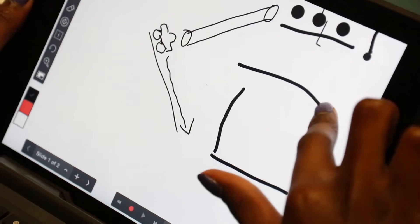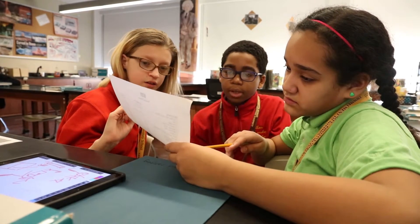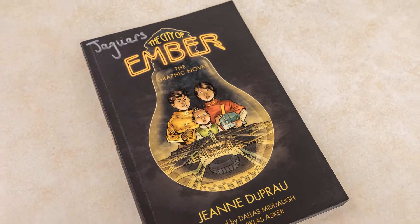It's a cross-curricular design thinking project with different subjects involved. Students start by reading the City of Ember book in reading class.